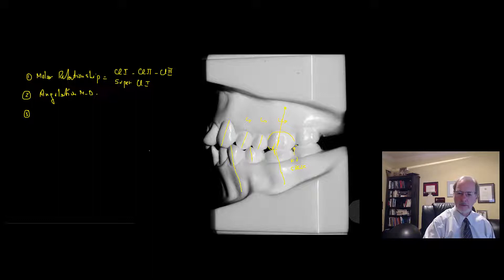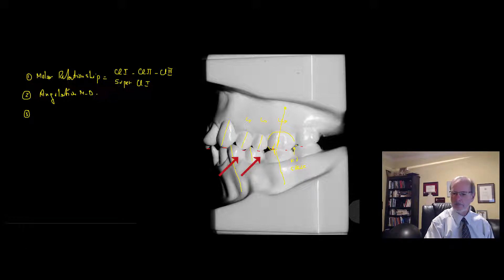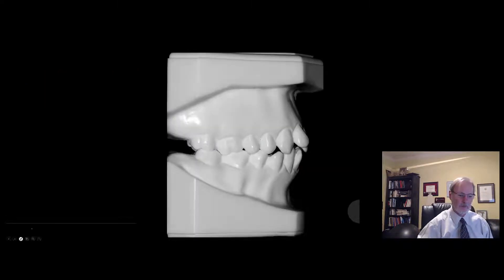Number three, you can immediately get an idea of the interdigitation and how favorable it is looking at the buccal cusp and incisal edges of the upper teeth. This gives you an idea of how the occlusal plane is presenting itself in the lateral area.